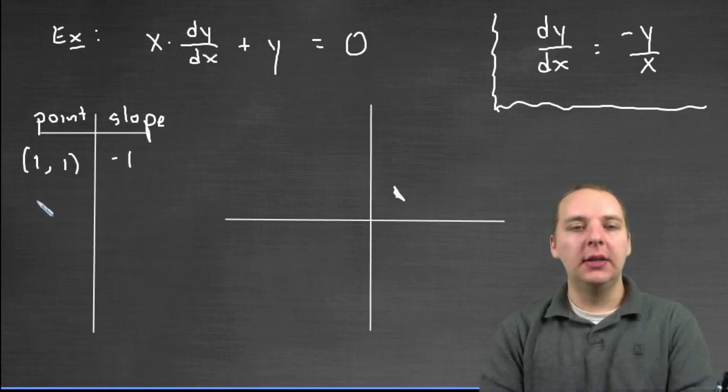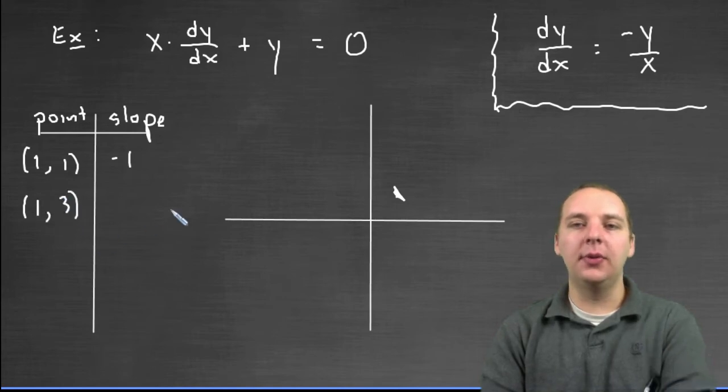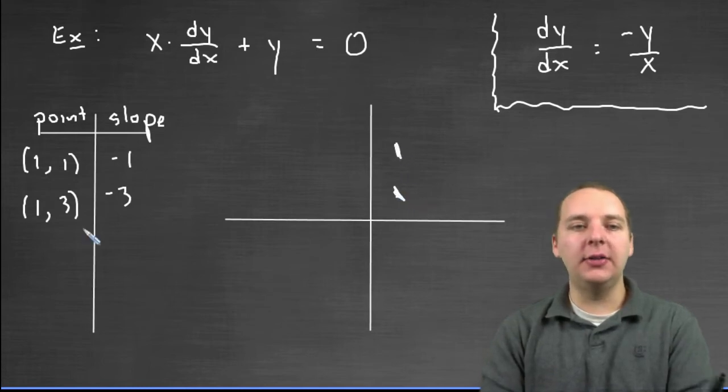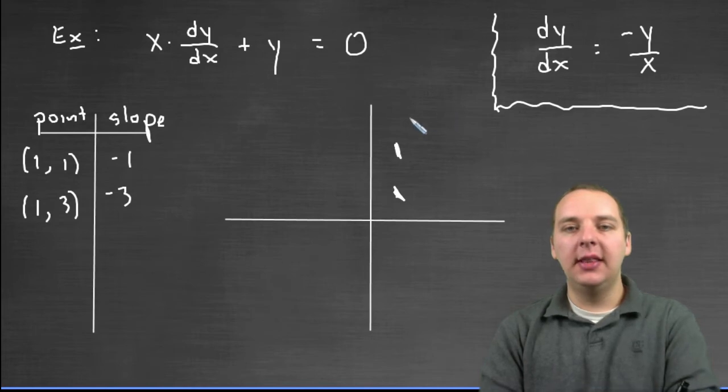Let's do this with a few more points. Let's do maybe like (1, 3). Negative 3 over 1 would be negative 3, slope of negative 3, that's a little steeper. And you notice, you'll start to notice patterns here. If you did (1, 4), (1, 5), (1, 6), (1, 7), they would just continue to get steeper.